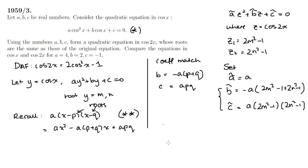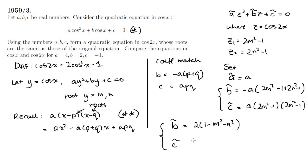Expanding and tidying, B̃ equals 2A(1 minus m squared minus n squared). And C̃ equals A times (4m squared n squared minus 2(m squared plus n squared) plus 1).